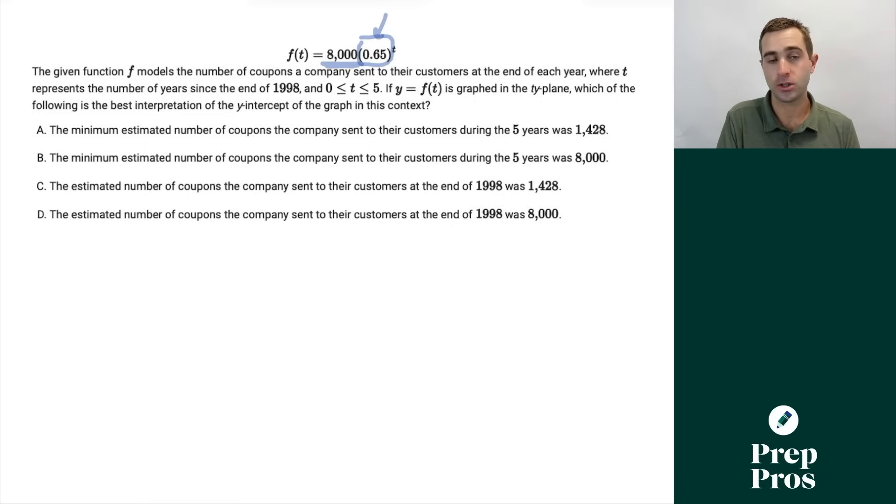This is going to be our rate of growth and decay. Since it's less than one, this is going to show decay. If it's greater than one, it would show growth. This would show us a 35% decrease period over period because you do 1 minus 0.35 to equal 0.65. So now let's go through and interpret this. The given function f models the number of coupons a company sent to their customers at the end of each year, where t represents the number of years since the end of 1998, and 0 is less than or equal to t is less than or equal to 5. That just means we're only modeling this out five years after the end of 1998.